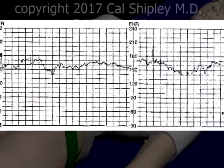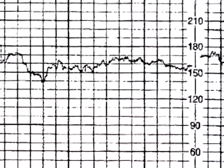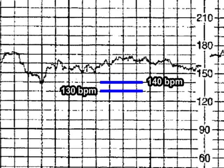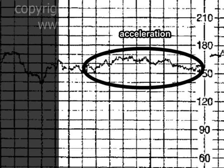Now let's take a closer look at one of these accelerations. The distance between each of the vertical lines on the FHR strip represents a 10-second interval, while the space between horizontal lines represents a difference of 10 beats per minute in the fetal heart rate. So with that knowledge in hand, let's take a look at this particular acceleration and see if it meets our criteria for a reactive NST.